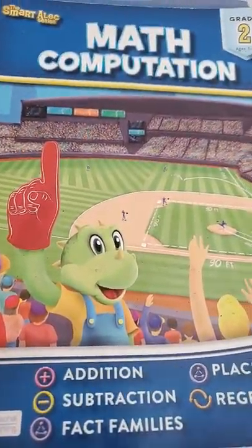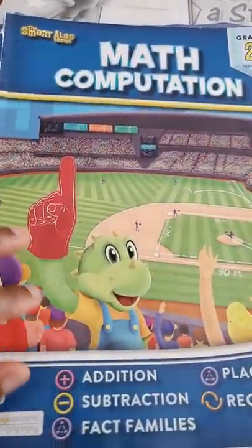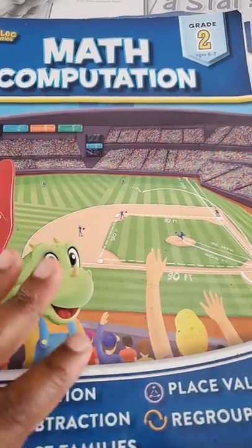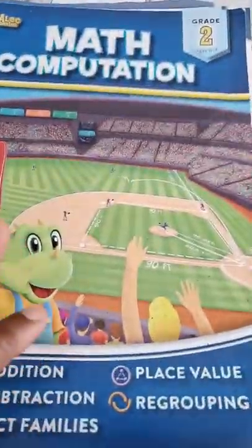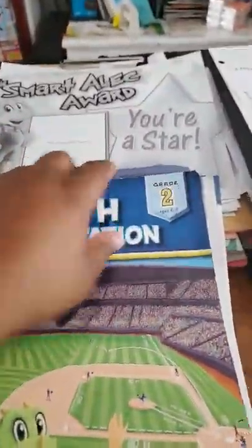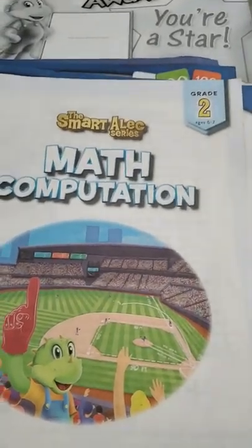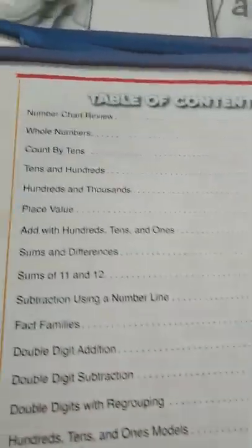So this book covers addition, subtraction, fact families, place value, and regrouping, which are really the things that a child should learn in math for second grade. Now it's a little ripped up because I just went through and graded everything and took out his certificate, but I wanted to show you guys anyway.